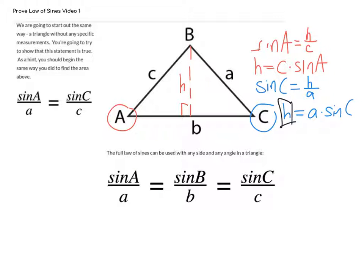At this point, I notice that both of my equations are equal to h. I'm going to use the transitive property to set these equal to each other, and say that c times sine of angle A is equal to side a times sine of angle C.